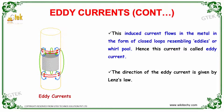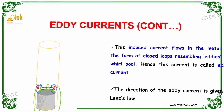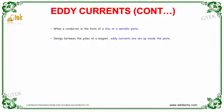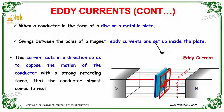The direction of the Eddy Current is given by Lenz's law. When a conductor in the form of a disc or a metallic plate swings between the poles of a magnet, Eddy Current is set up inside the plate. This current acts in a direction so as to oppose the motion of the conductor, with a strong retarding force such that the conductor almost comes to rest.